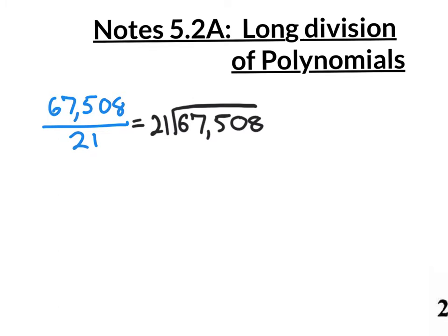The next thing to do is to not really think how many times will 21 go into 67,508 — that's kind of ridiculous — but it's easier to just take a look at the first digit, the 2. How many times will 2 go into 6? 3 times. So let's put the 3 right here, and it's kind of like a distribution problem. 3 times 1 is 3, so we put the 3 right there, and then 3 times 2 is 6, so we put the 6 right there.